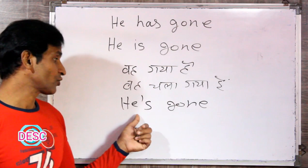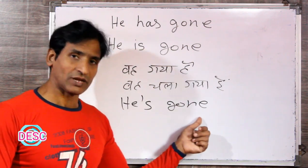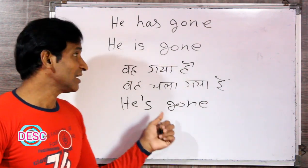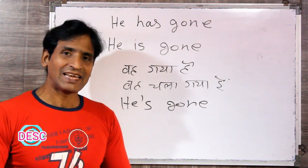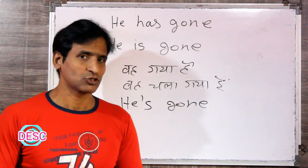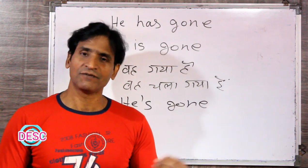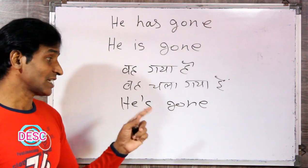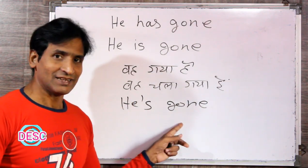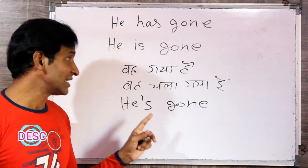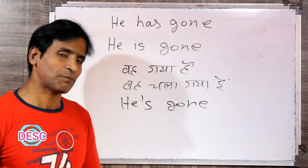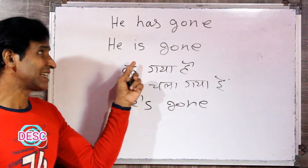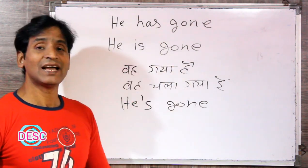When we pronounce 'he is gone,' it sounds like 'he is gone,' okay friends? So slowly, as language naturally evolves, people start using it a certain way, and then that form becomes common. Everyone starts writing it and using it that way. But the truth is, 'he is gone' is not the correct form — 'he has gone' is grammatically correct.